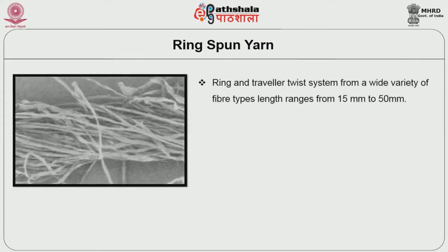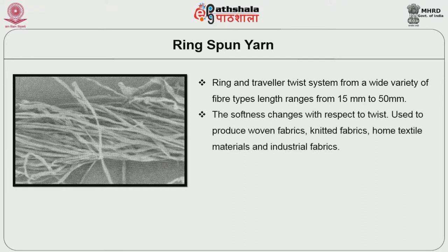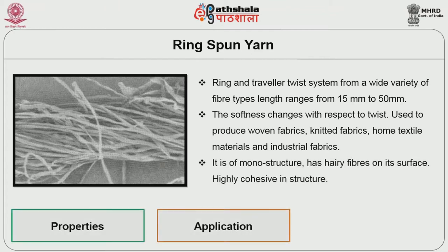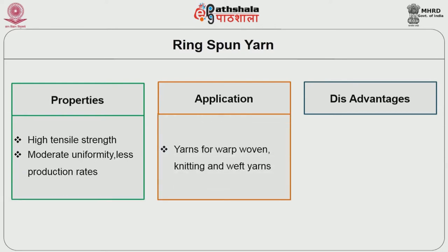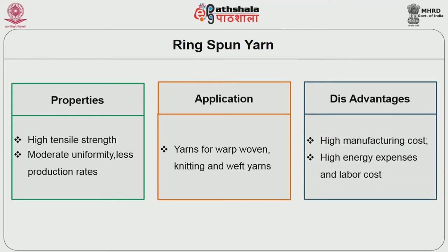Ring spun yarns are produced on the ring and traveler twist system from a wide variety of fiber types, with fiber length preferably ranging from 15 mm to 50 mm. The softness changes with respect to twist, and it is used to produce woven fabrics, knitted fabrics, home textile materials, and industrial fabrics. It is normally of monostructure, has hairy fibers on its surface, highly cohesive in structure, with high tensile strength and moderate uniformity, but very low production. Applications include yarns for warp, woven, knitted, and weft yarns. Main disadvantages are high manufacturing costs, high energy expenses, and high labor costs due to low production.